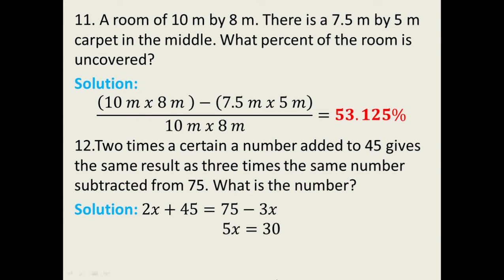So 2x plus 3x, that's 5x, which is equal to 75 minus 45, that is 30. Now we can get the value of x when we are going to divide both sides by one fifth. So the value of x here is 6.